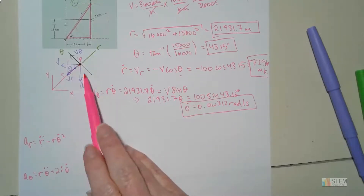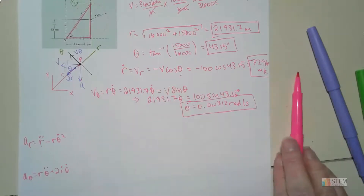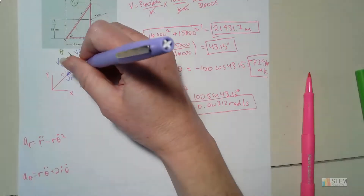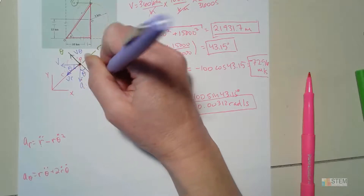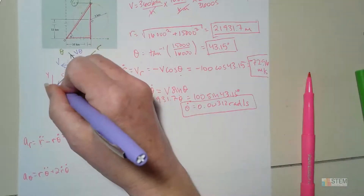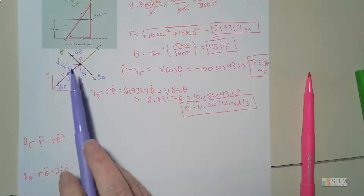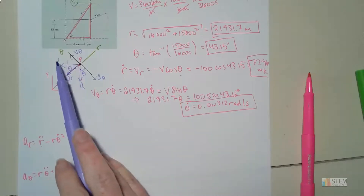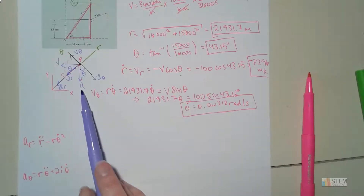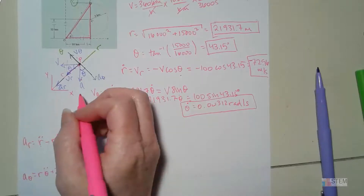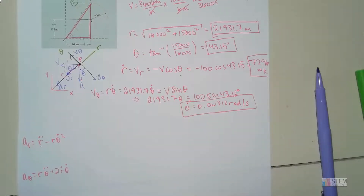Just like with velocity, I can split the acceleration into components — this angle is θ, giving an a_θ component and an aᵣ component. The difference from velocity is that I wasn't given the magnitude of acceleration, so I need to find it first. We'll use normal and tangential information — we have curvilinear motion going in a circle.